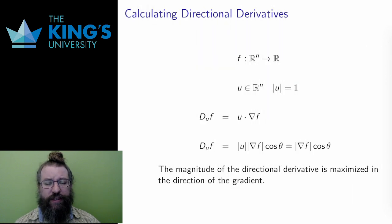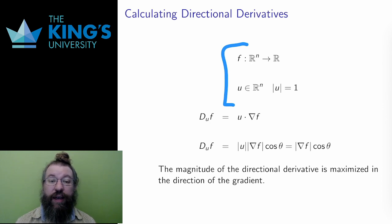All right, that's a nice definition, but I'd rather not calculate with a limit definition. Happily, there is a better way to calculate directional derivatives. Under the same assumptions, a scalar field f and a unit direction u, the directional derivative can be calculated as the dot product of the unit direction u with the gradient.